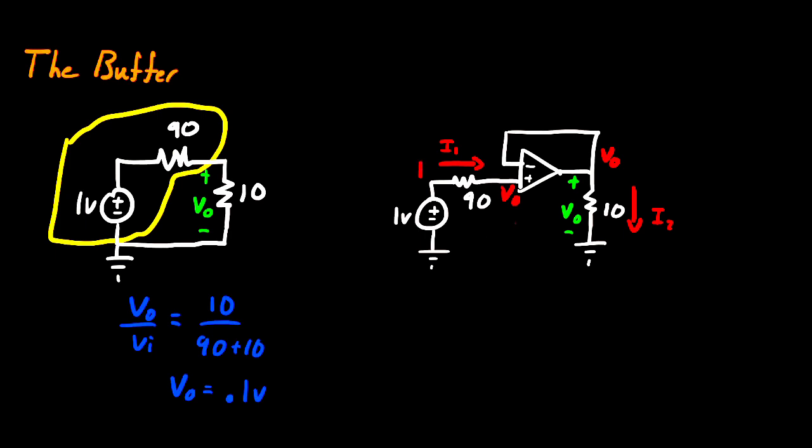And now we have to write the equation for our 90 ohm resistor. We want to figure out what VO is. So to do that, we can write that I1 is equal to 1 minus VO divided by 90.